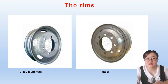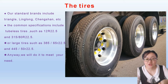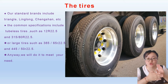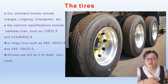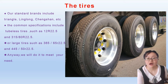Let's move on to the tires. Our standard tire brands include Triangle, Lianlong, and Chengshan, among others. The common specifications include tubeless tires such as 22.5 inch, and larger tires such as 385/65R22.5. We will configure the tires to meet your needs. This is our Triangle tire and this is the Lianlong tire.